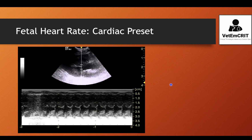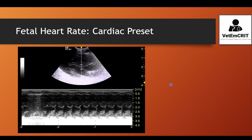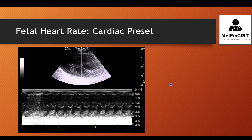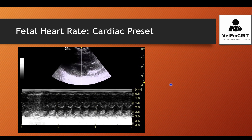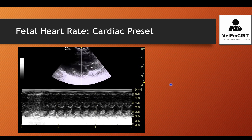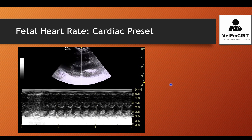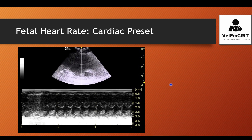Step number one: you want to identify the fetal heart and zoom it in. You want the heart to look as big as possible so that you may get the most accurate readings. In this particular video, I'm using a feline adult heart as an example. With the abdominal preset, I will do the measurements on actual fetal hearts. Once you identify the fetal heart and optimize your image, you want to turn on M-mode.